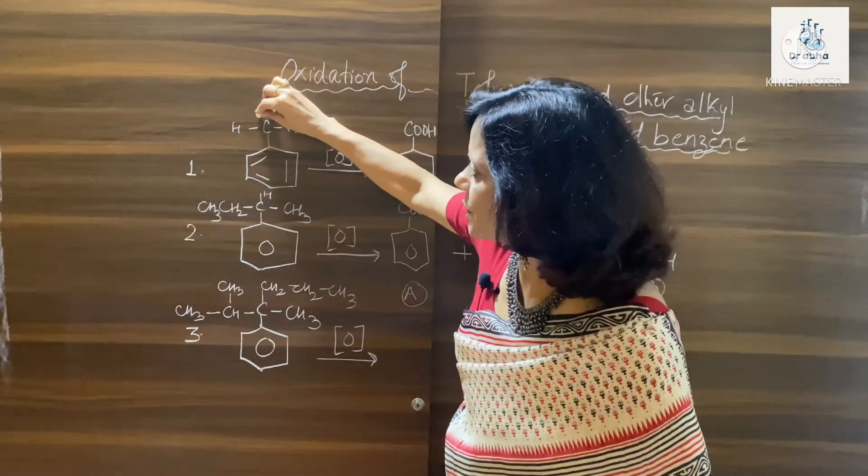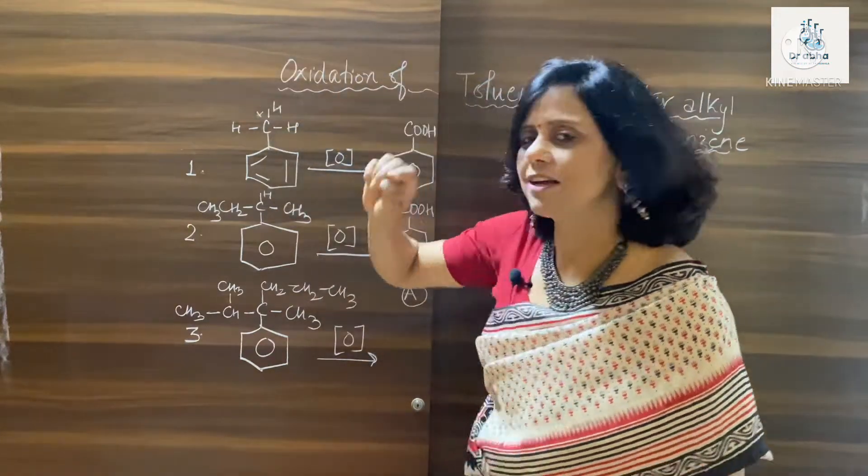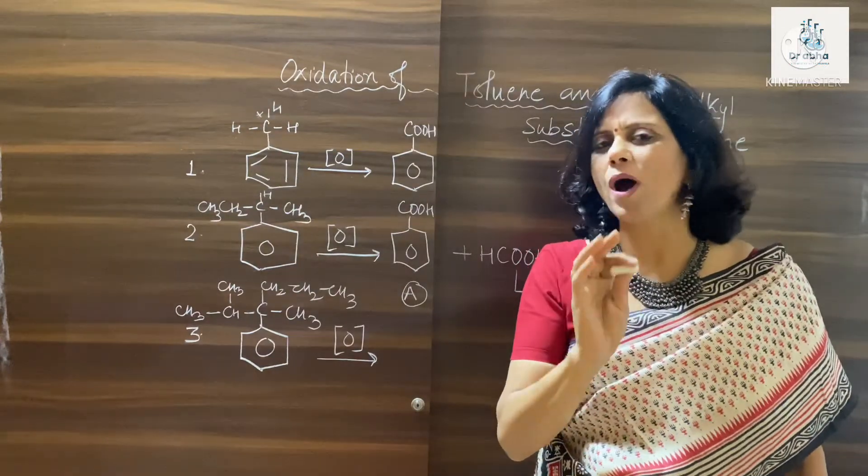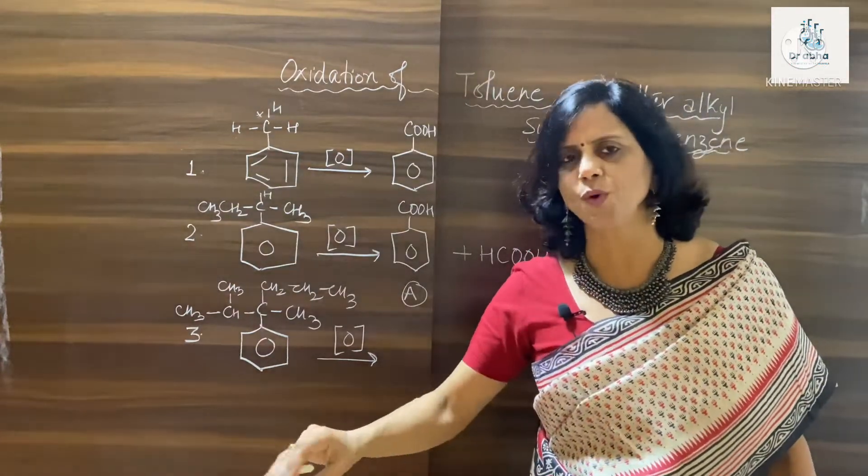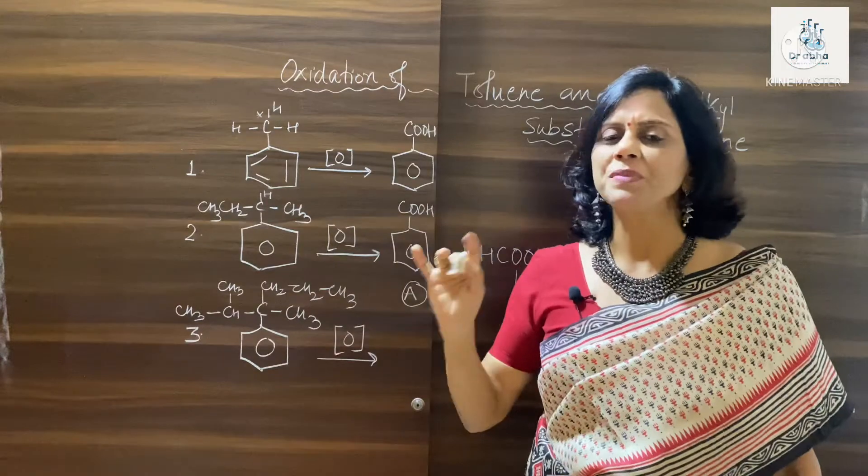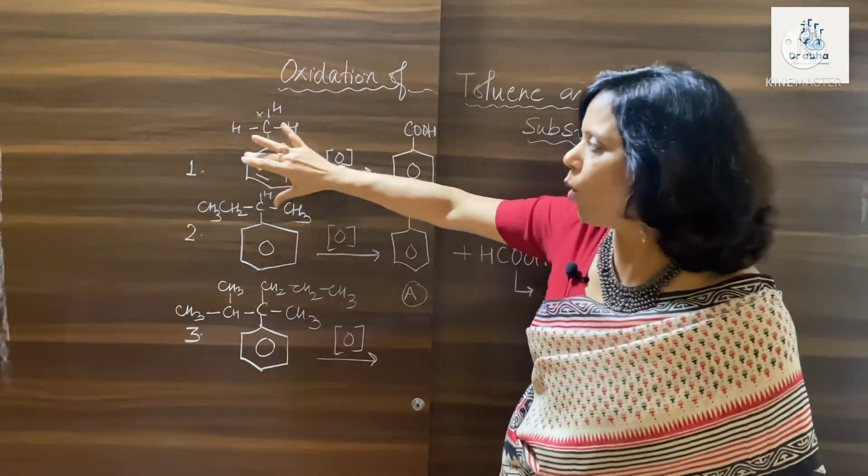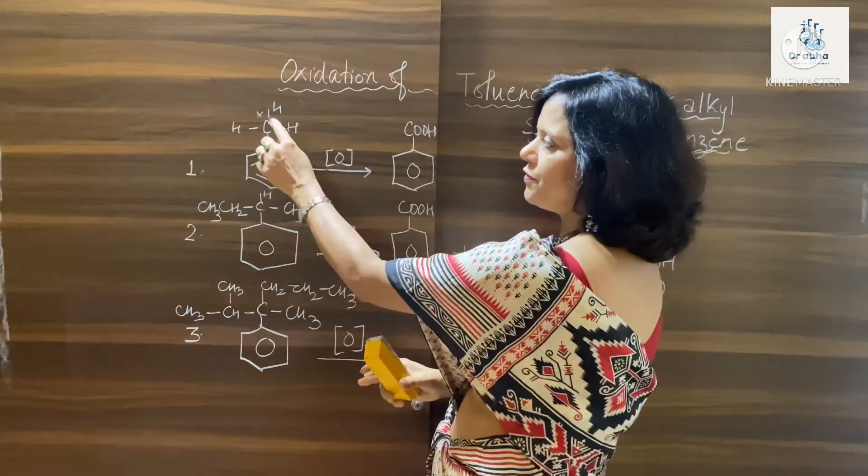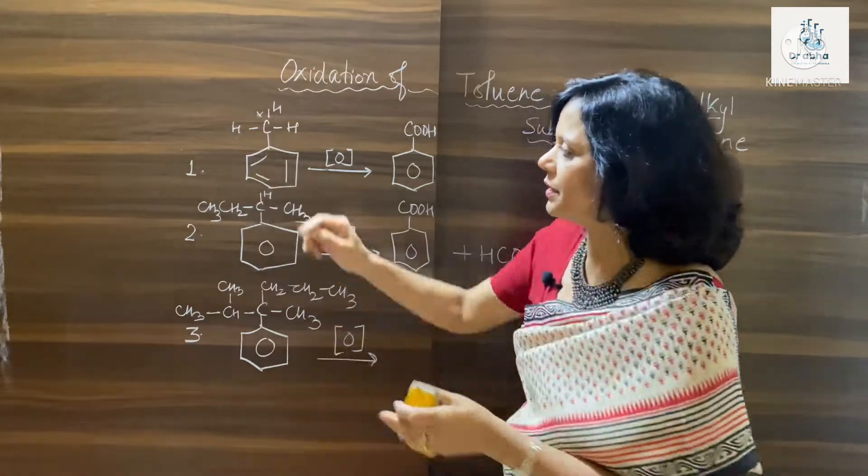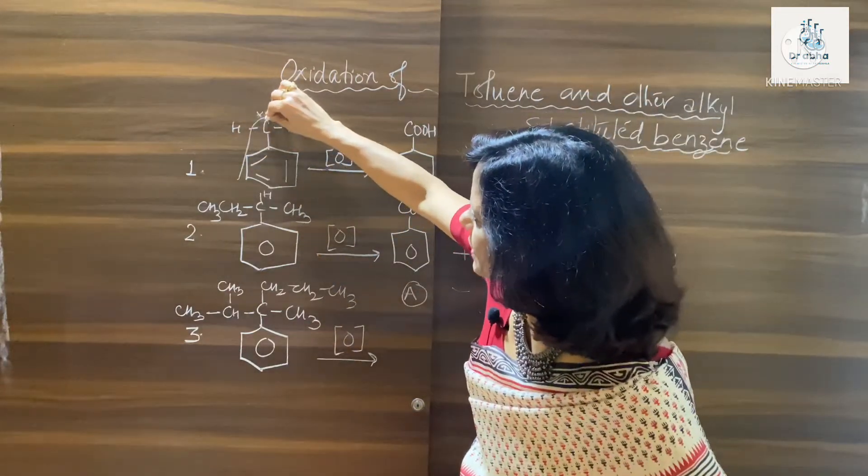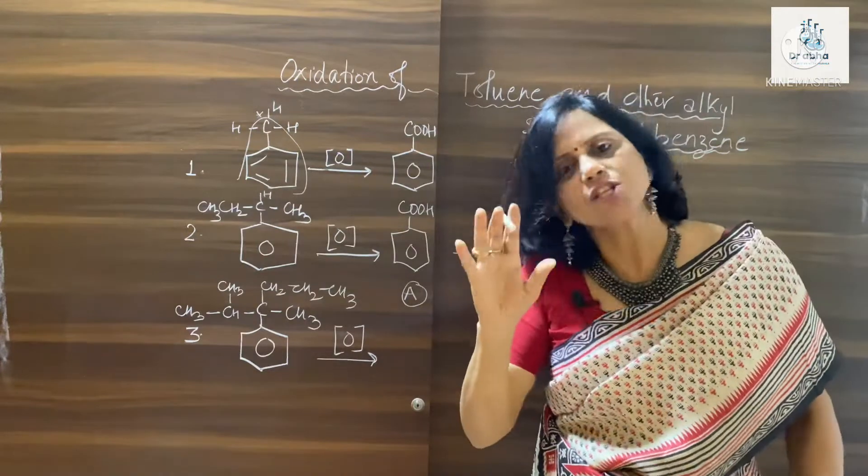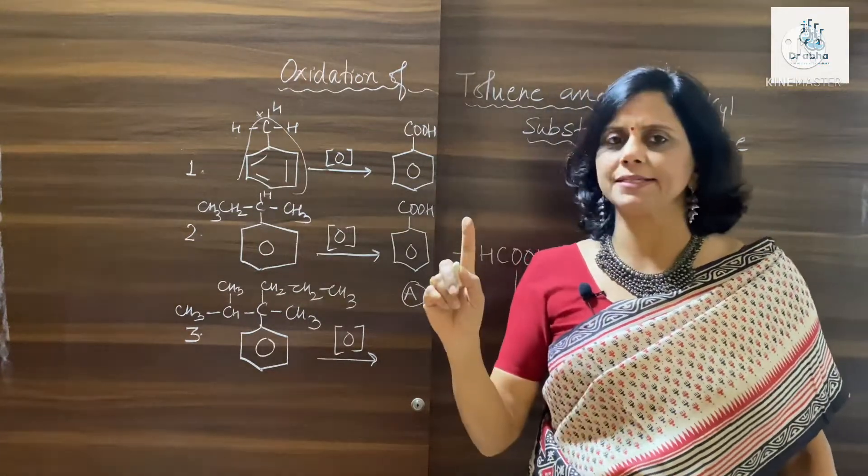So if this carbon has minimum one hydrogen, we are in the safe zone. The oxidation is possible and always the whole of this carbon has to give one benzoic acid.